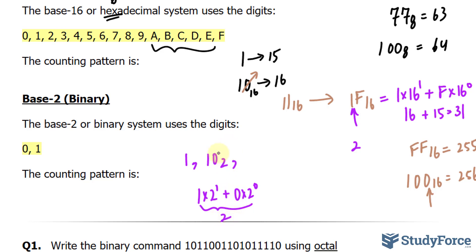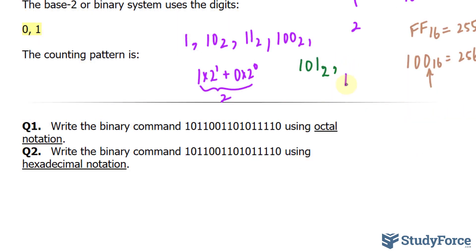To write down the number 3, we would have 1, 1, sub 2. The number 4 would be 1, 0, 0, sub 2. 5 would be 1, 0, 1, sub 2. Just follow the pattern. Then comes 1, 1, 0, then 1, 1, 1. We are at 1, 2, 3, 4, 5, 6, 7.